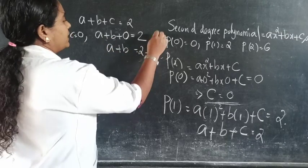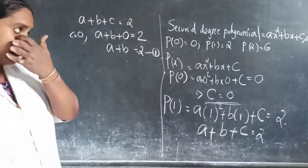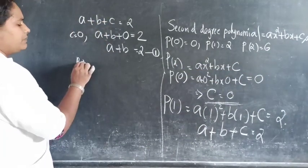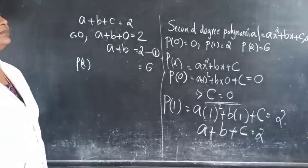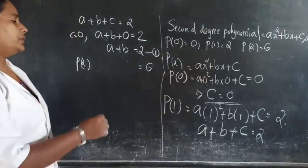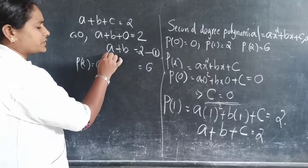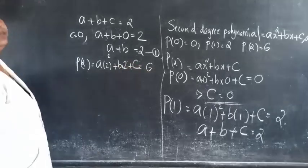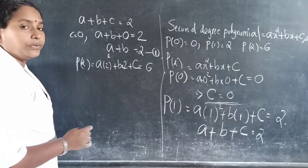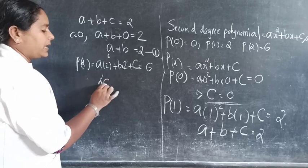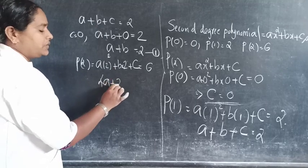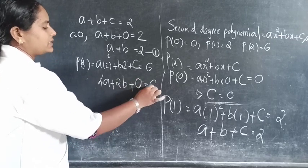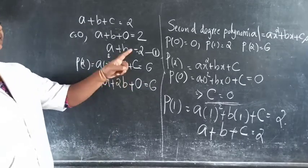So a plus b plus c equals 2, which is condition 1. Now applying p(2) = 6. Substituting x = 2: a into 2 squared plus b into 2 plus c. That is 4a plus 2b plus c equals 6. Since c is 0, we get 4a plus 2b equals 6.